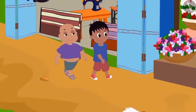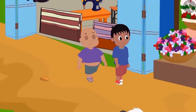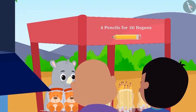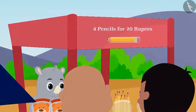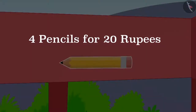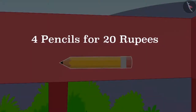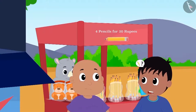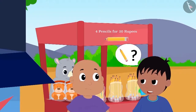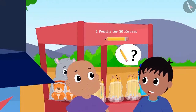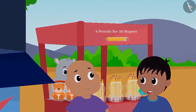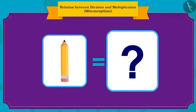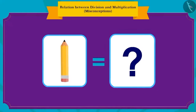Raju and Bablu are out in the market. Raju read what was written on Gagu's shop front: 'Four pencils for 20 rupees.' He asked Bablu how much they would have to pay if they wanted to buy one pencil. Children, can you tell how much Raju and Bablu would need to pay for one pencil?